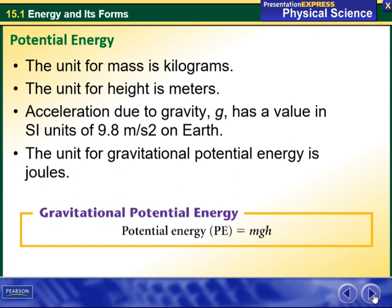The unit for mass is kilograms. The unit for height is meters. Acceleration due to gravity, which technically is noted as g, has a value in SI units of 9.8 meters per second squared on Earth. The unit for gravitational potential energy is joules. So technically, potential energy or PE is measured by mass times height times the acceleration due to gravity, which is g.